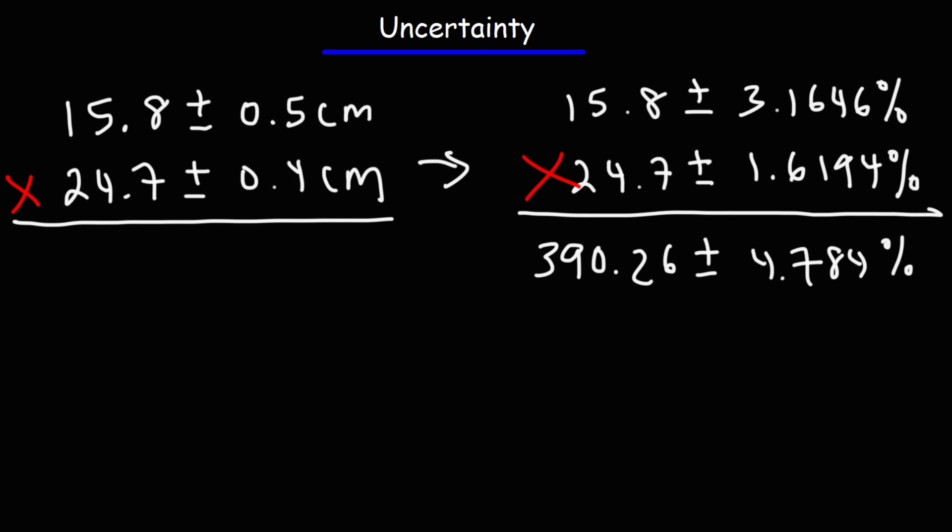Now, there's still some other things we need to do. So now that we have the percentage, we need to convert it back into a non-percentage form. So what we need to do is find out what is 4.784% of 390.26. To figure that out, take 390.26, multiply it by this value as a decimal. If you take 4.784% and divide it by 100, the decimal value is 0.04784. Basically, move the decimal two units to the left. So 390.26 times that number will give us 18.67.